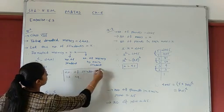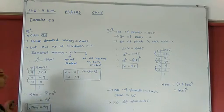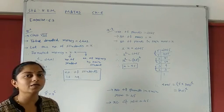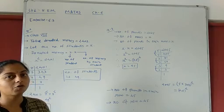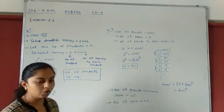If the number of students in the class equals x, then we find the square root of 2401. The answer is 49. So the number of students is 49. Got it? Next question.